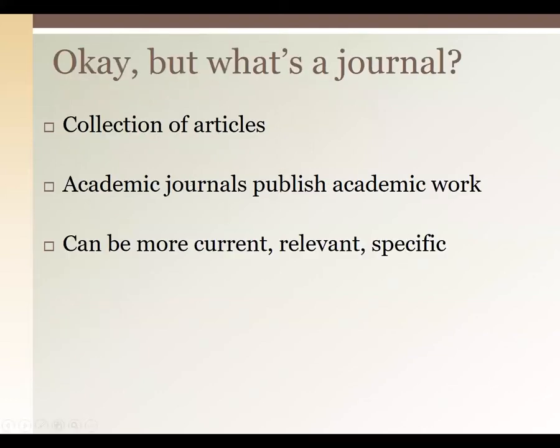When I say 'journal,' what does that mean exactly? You can think of a journal as a collection of articles, just like a magazine, but usually with far fewer advertisements. Peer-reviewed journals are used by academics of all professions to update each other about their work, inform the world about new discoveries or changes in research, and contribute to their field in a formal way. Journals are published on a quicker timetable than books, so they tend to be more current and relevant to trending topics.